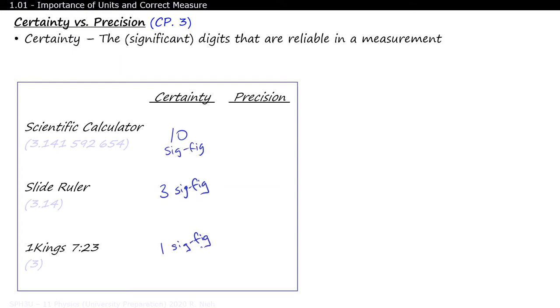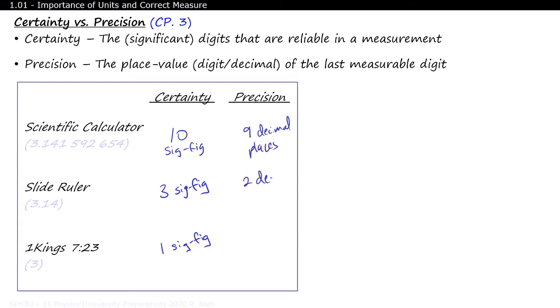Precision on the other hand, shows the place value that you've rounded your final answer to. At the end of the day, all measurements are rounded. For example, even though pi is an irrational number, the calculator shows the precision of pi to the nearest 10 billionth. The slide rule shows the precision to the nearest hundredth, and the Bible approximates pi to the nearest whole, as back then the concept of decimal numbers have not been discovered yet.